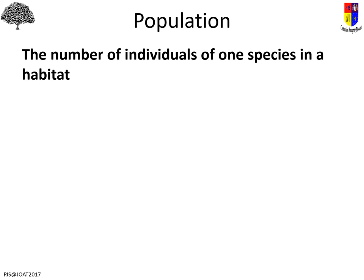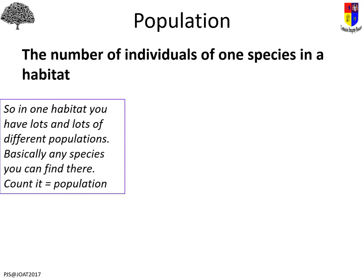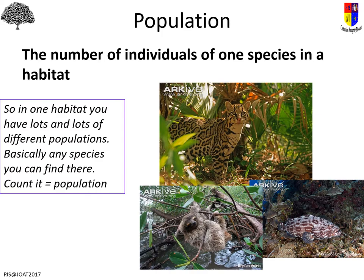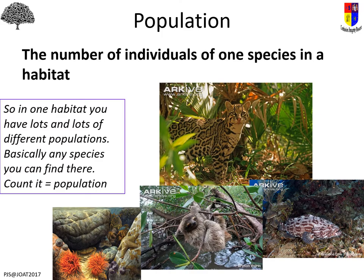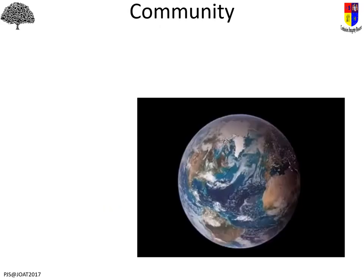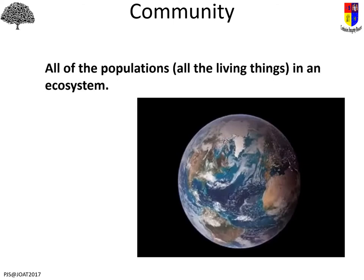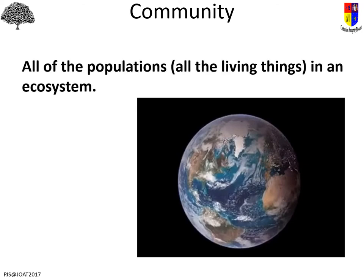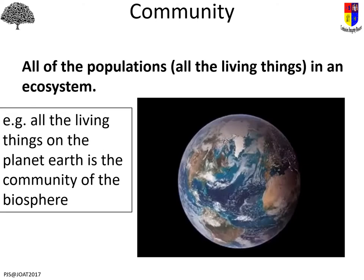The definition for population is the number of individuals of one species in the habitat. So you'll have lots of different populations — for any species you can find there, you just count them, and that's your population. Community means taking all of the populations — all the living things — and adding them up for that habitat. On a large scale, every living thing on the planet is the community of the entire biosphere.